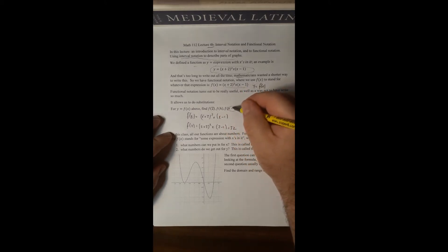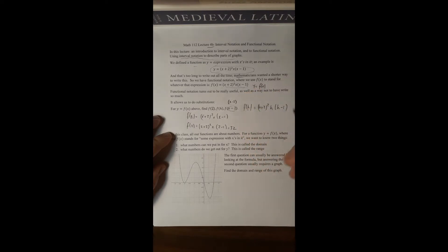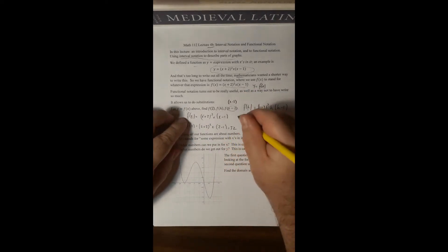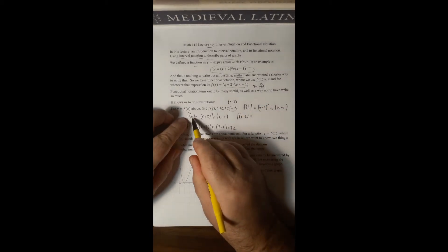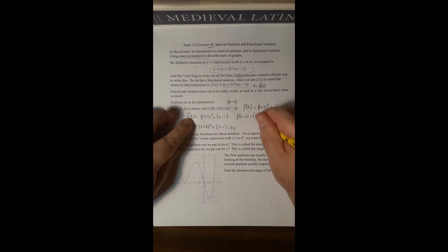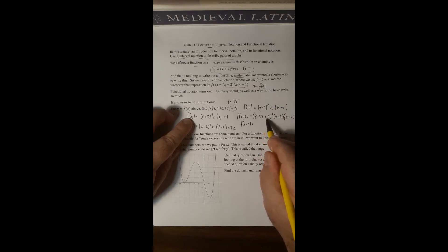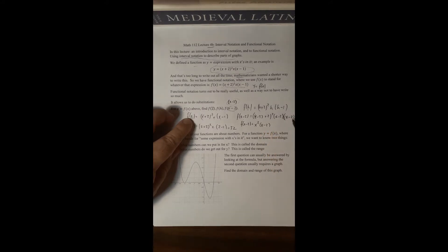What about f of x minus 2? This is a compound expression — it has multiple parts — and compound expressions should be placed inside parentheses when substituting. So every x gets replaced by (x minus 2) in parentheses. That gives (x minus 2) plus 2 squared times (x minus 2) times (x minus 2) minus 1. We can simplify: x minus 2 plus 2 is just x, so that factor becomes x squared. The last part, (x minus 2) minus 1, simplifies to x minus 3.